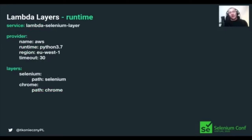In the serverless.yaml file, the first keyword is 'service' - that's our service name, let's call it 'lambda-selenium-layer'. Then provider settings: AWS, Python 3.7 runtime, Europe West region, timeout of 30 seconds, which should be enough since our tests are about 20 seconds. Then the 'layers' keyword describes our two Lambda Layers - Selenium and Chrome - mapped to their specific directories.